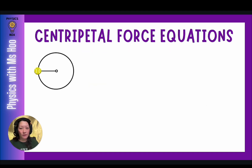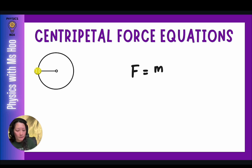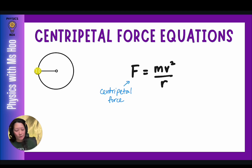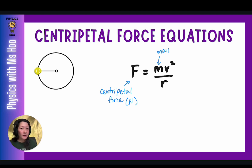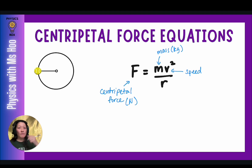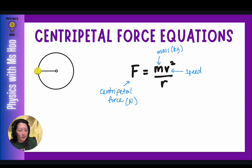How do you calculate centripetal force? The formula is F = mv²/r, where F is the centripetal force in Newtons, m is the mass of the spinning object in kilograms, v is the speed at which the object is moving in meters per second, and r is the radius of the circular path in meters. Centripetal force can only be calculated when the speed is uniform, as we want the object to spin at a constant speed.